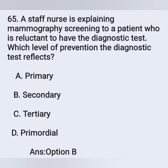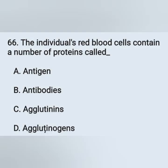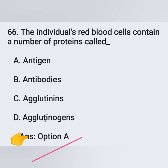Question 66: An individual's red blood cells contain a number of proteins called: Option A: Antigen, Option B: Antibodies, Option C: Agglutinins, Option D: Agglutinogens. The correct answer is antigen — Option A is the correct answer.